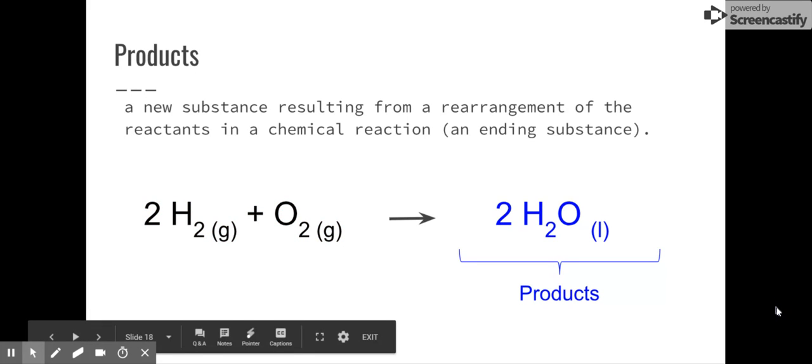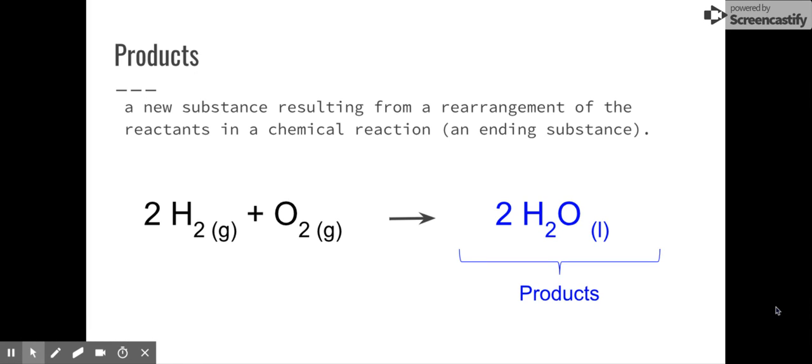On the right hand arrow, we get these things called products. These are what result after the reaction ends. They are a rearrangement of the reactants. So the reactants make the products and the products may be one like it is right here, which is water, or we could get two or more products. We can have a lot of different products.